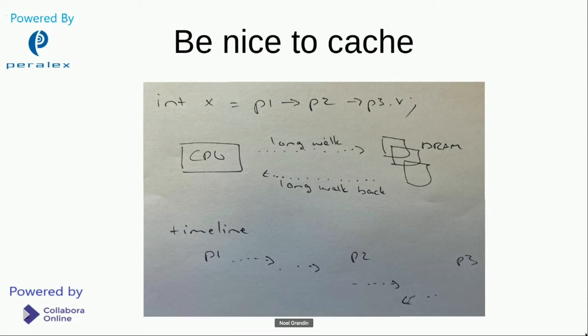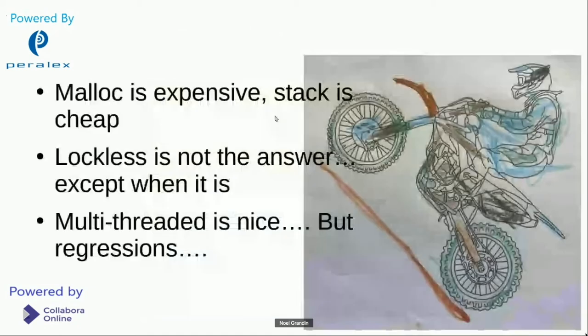For example, std::vector is almost always a better idea than std::list, unless you have particularly large objects, because the data is co-located. So when you fetch it from DRAM, you're typically fetching multiple elements at the same time.